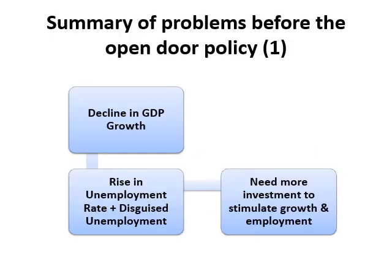The first point is why did Egypt change its economic policy to an open door policy in 1974. After the 1973 war, the Egyptian government faced severe economic problems. The root causes of many of these problems can be traced back to economic policies that interfered against market forces and private property rights. Some problems were also related to the effect of the war on the Egyptian economy. The main cause was a decline in Egypt's GDP growth rate, which resulted in a rise in the unemployment rate, requiring more investment to stimulate growth and employment.